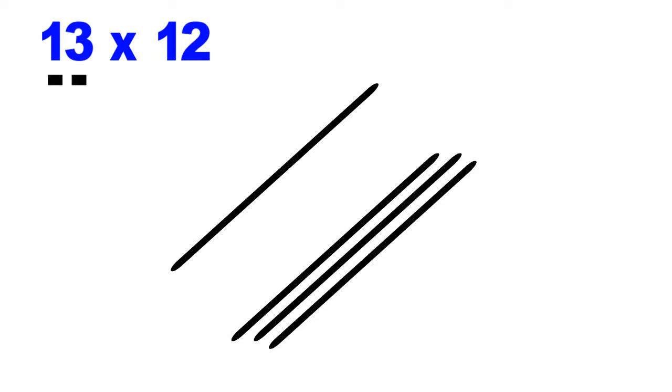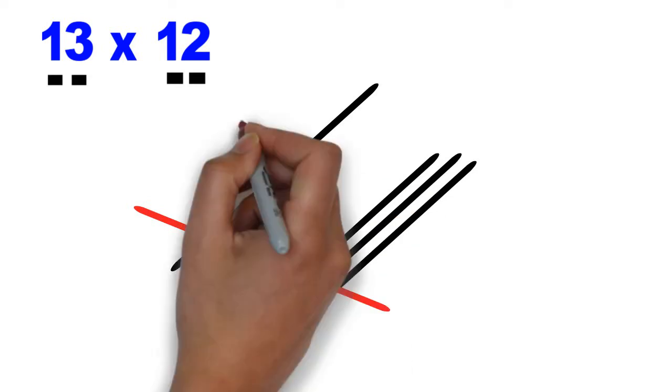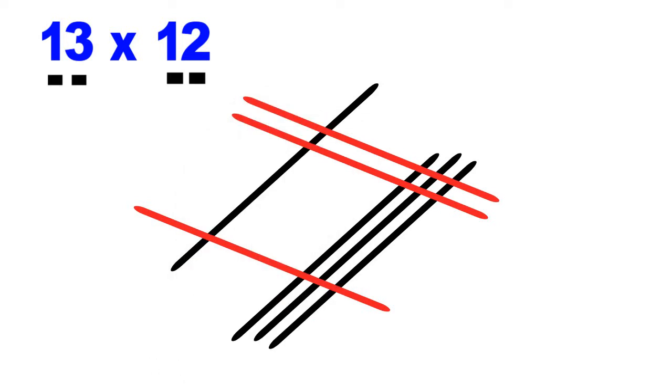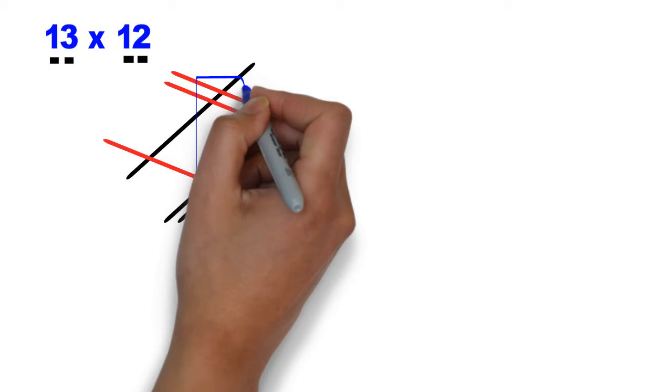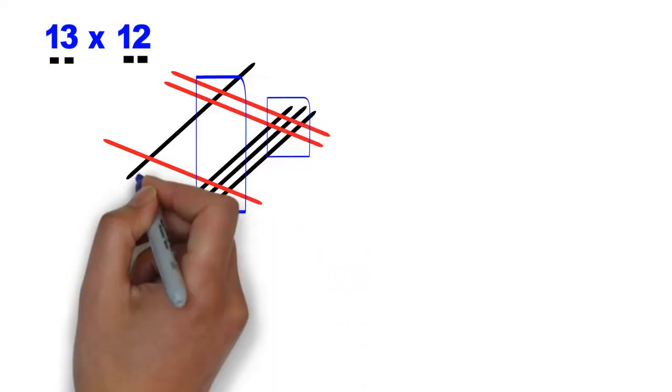Now look at the number 12. One line for the digit 1. And after leaving some space, two lines for the digit 2. 1 and 2. Once this is done, we separate them into three separate zones where the lines intersect.